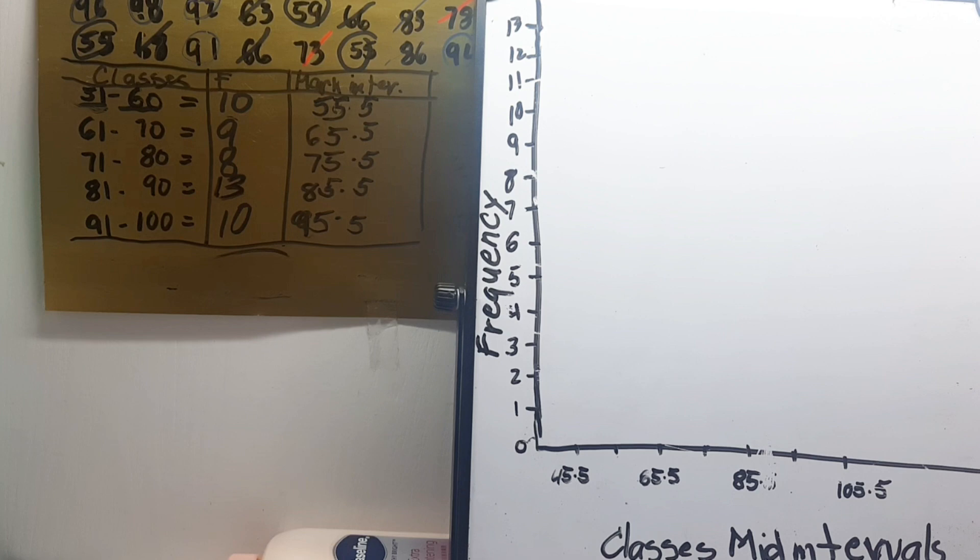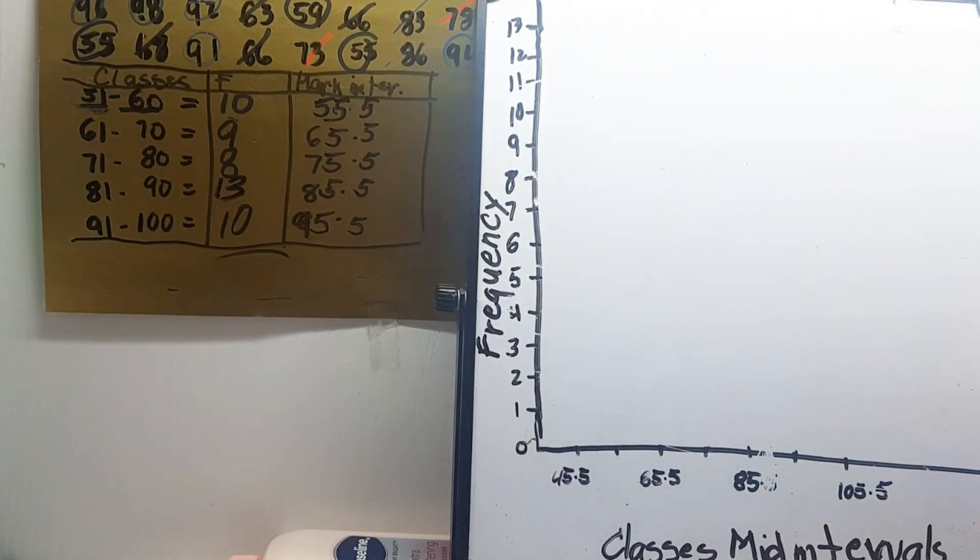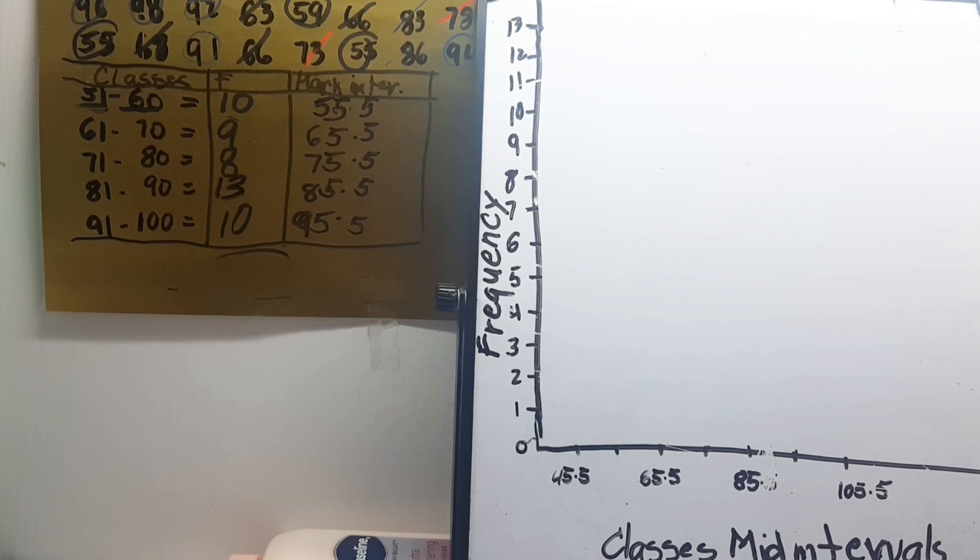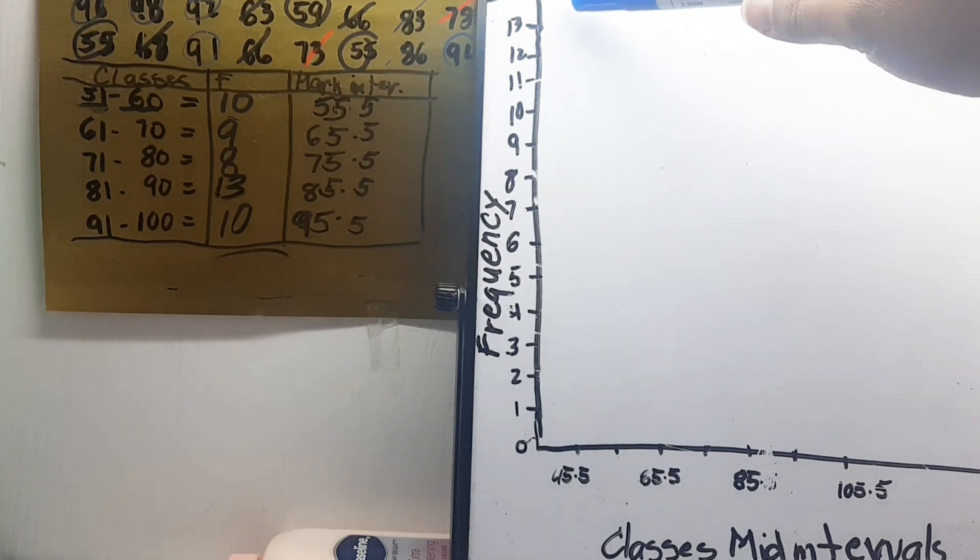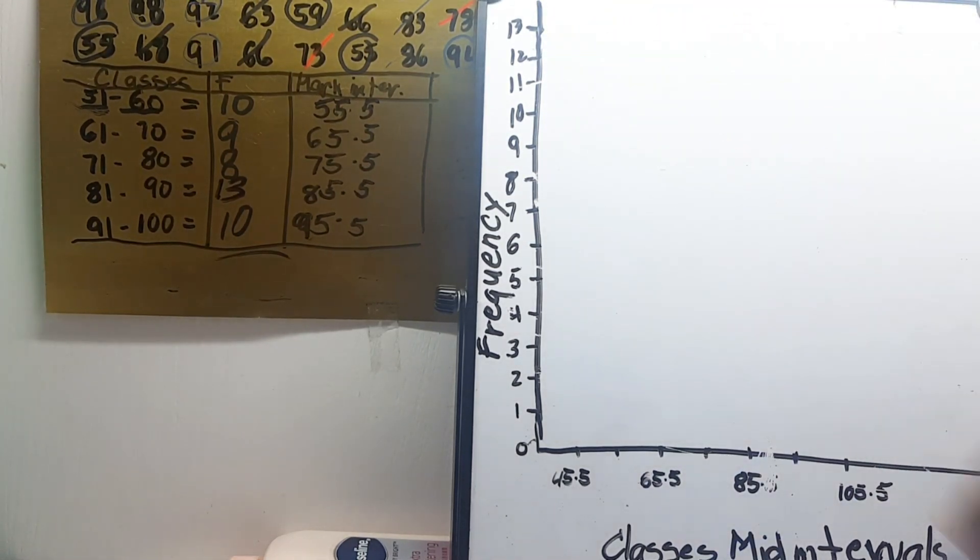So next, let's proceed how to graph a polygon graph. As we said a while ago, a polygon graph is a frequency polygon. It is a line graph of class frequency plotted against class midpoints. So our axis here is the frequency, the vertical line, and the horizontal line is our class mid intervals. So here is how to make the graph, how to make the axis of this graph.